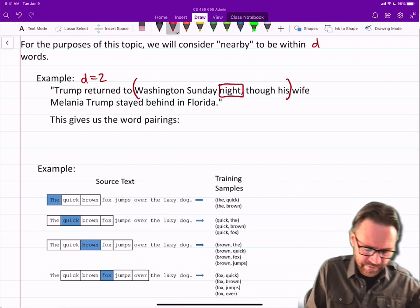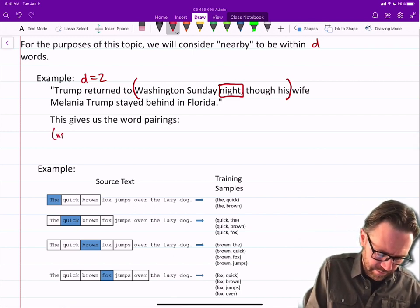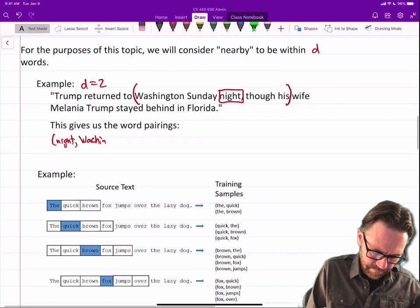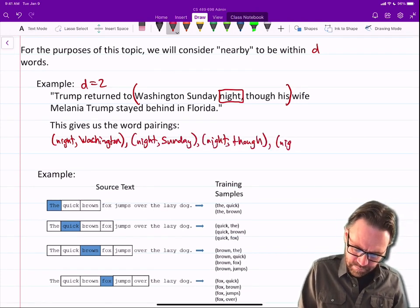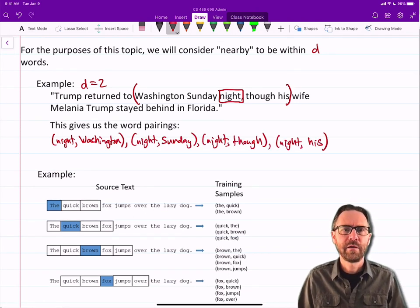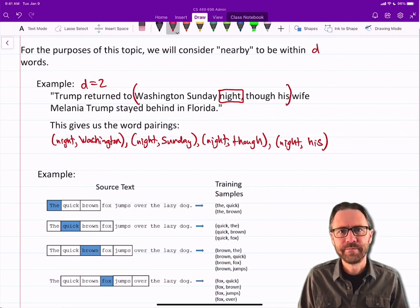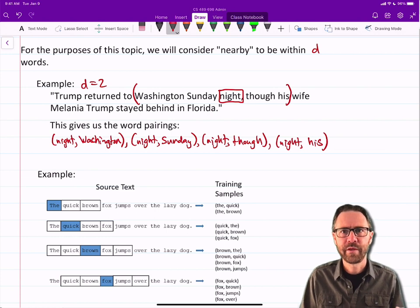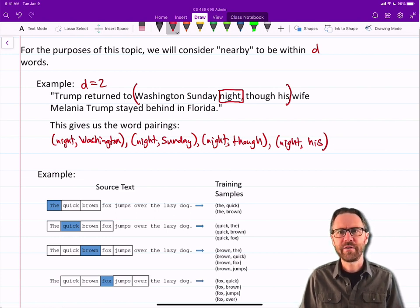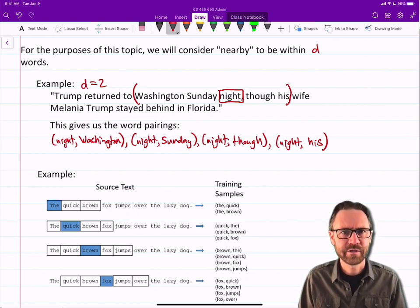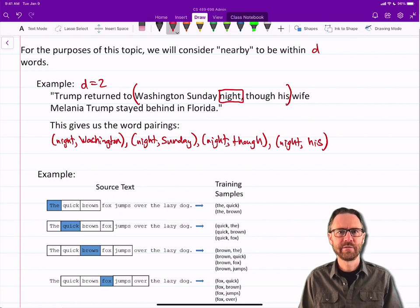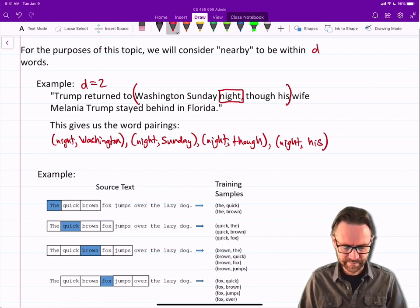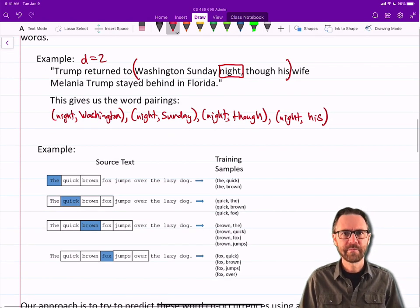For the purposes of this topic we'll consider nearby to be within D words. For example, if D equals 2, then if I focus on the word night, then I'm going to consider word pairs formed between night and all the other words in this group of five words. So for example, focusing on night, this gives me the word pairs. Okay, quick joke. A surgeon is standing over a patient preparing him for surgery. The surgeon says, it's okay David, it's only a small procedure, you've got this. The patient says, my name's not David. And the surgeon says, I know, my name's David.